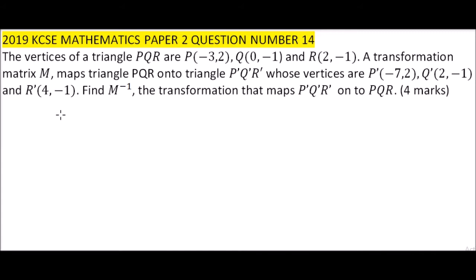The first thing we do is we need to get the matrix M so that we can get M inverse. Let our M be represented by A, B, C and D. You can form a matrix using the vertices of triangle PQR. This will be (-3, 2), (0, -1) and (2, -1). So this is actually P, Q and R.